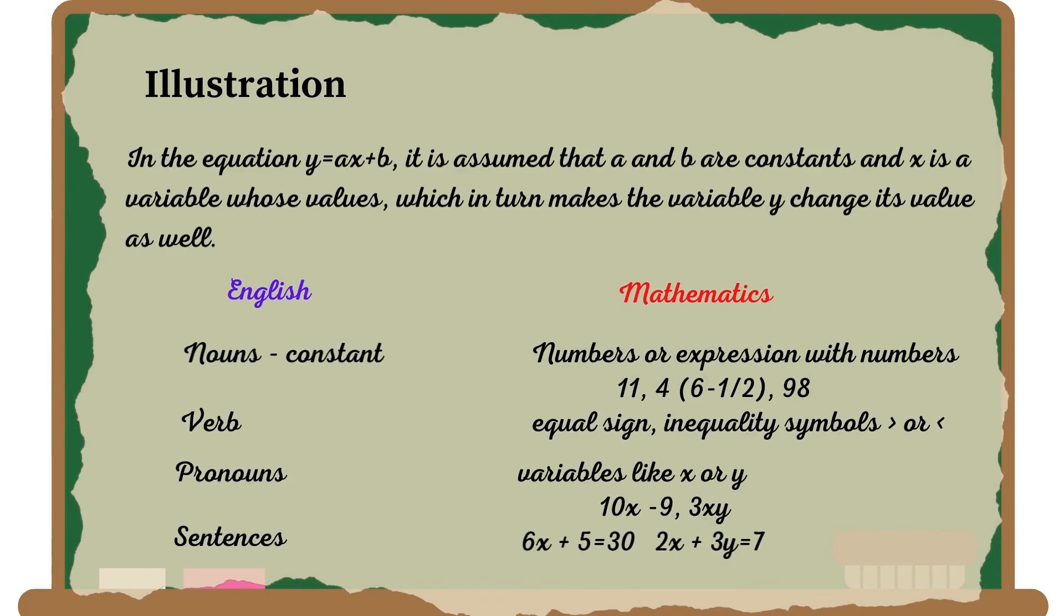Now let's take a look at this illustration. In the equation Y equals AX plus B, it is assumed that A and B are constants and X is a variable whose value changes, which in turn makes the variable Y change its value as well.